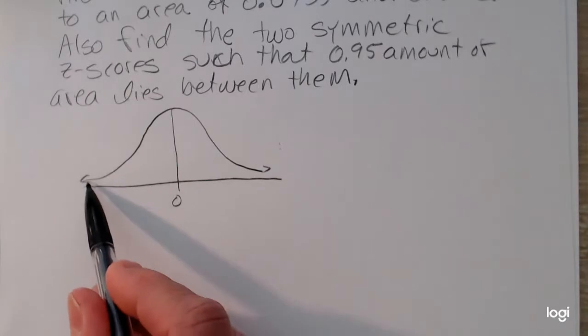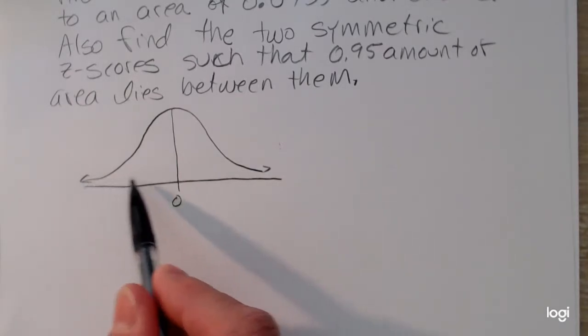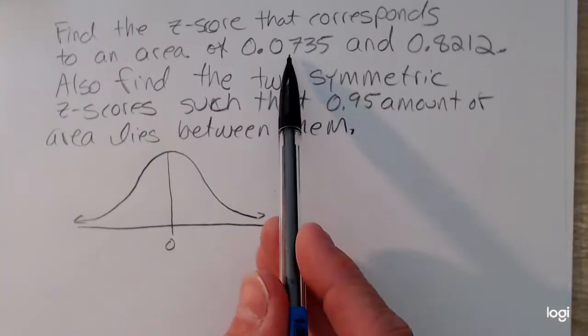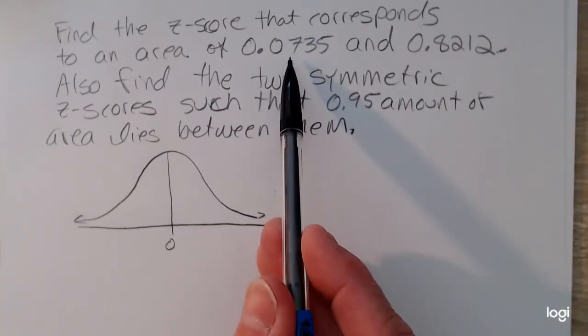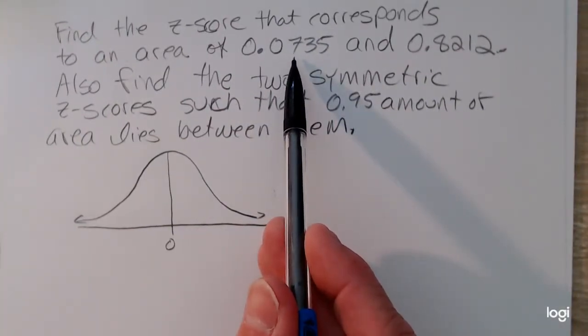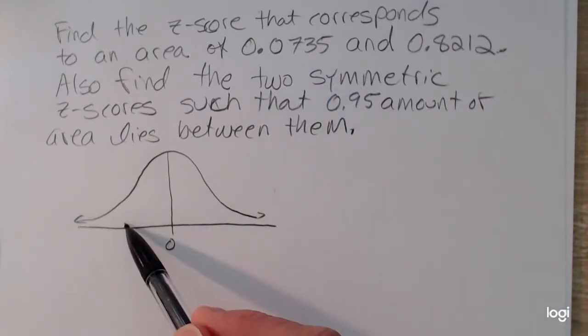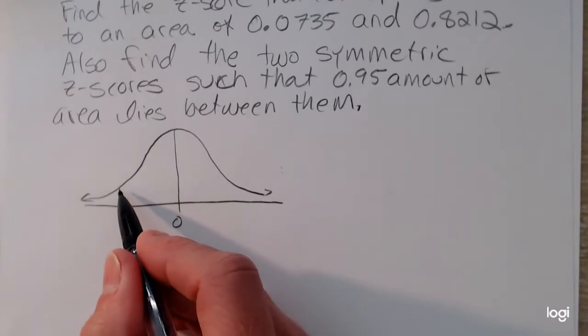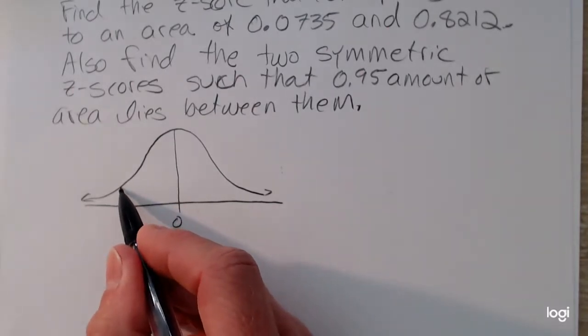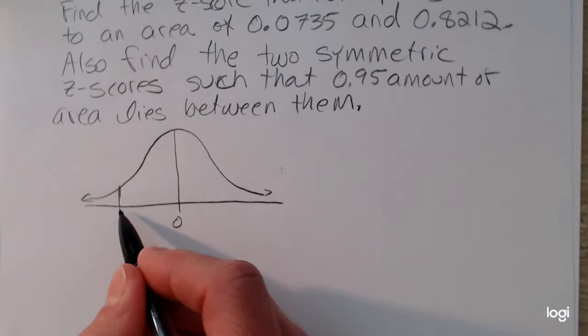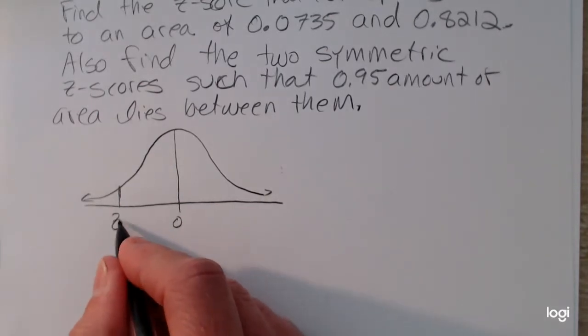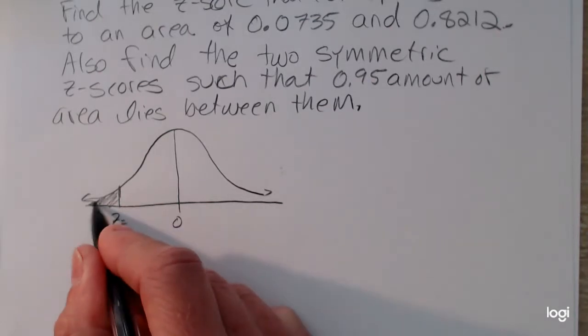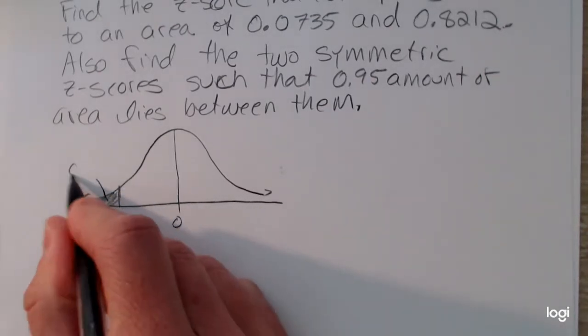Remember, the cumulative area from negative infinity up to 0 is 0.5. So if I'm given a cumulative area of 0.0735, I expect my z-score to be negative. And being a reasonably small amount of cumulative area, it's going to be further away from 0. So this is my mystery z-score. And what I'm given first is this cumulative area.